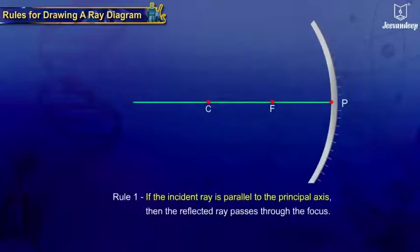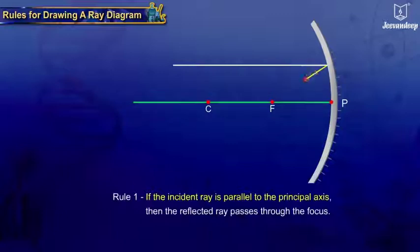Rule 1: If the incident ray is parallel to the principal axis, then the reflected ray passes through the focus.